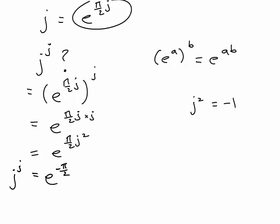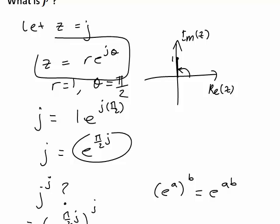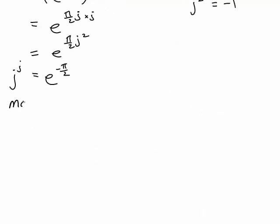Usually when we look at something like this we'd expect maybe just one answer. But is this the only way to represent j to the power of j? In actual fact, it is not. When we were writing j in exponential polar form, the angle was pi divided by 2 radians, but it would also be equivalent to going around the circle again to get pi on 2 plus 2 pi, which is 5 pi on 2 radians. In fact, pi on 2 plus any integer multiple of 2 pi would also give a representation of j. So more generally, j has argument theta equal to pi on 2 plus 2k pi for integer k.